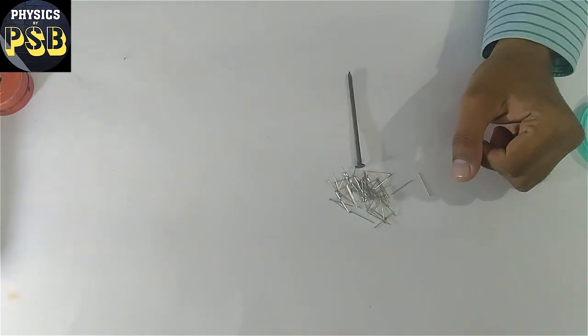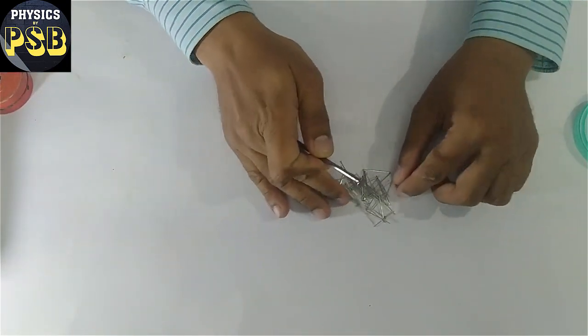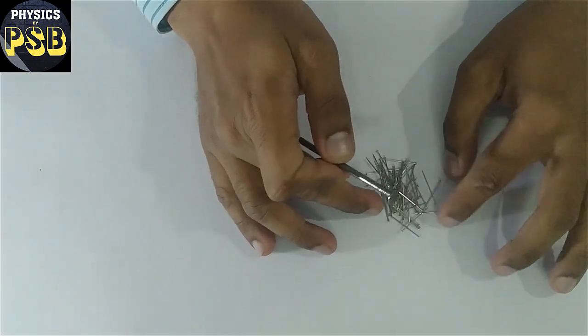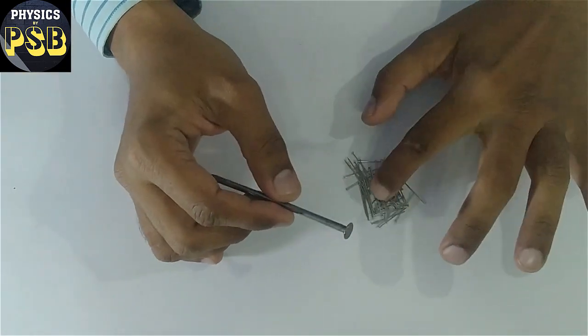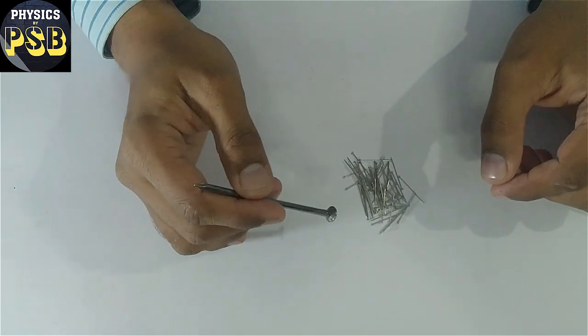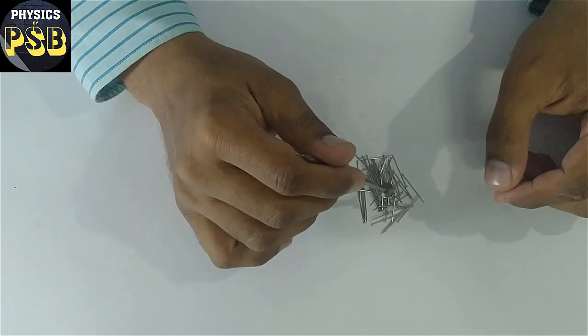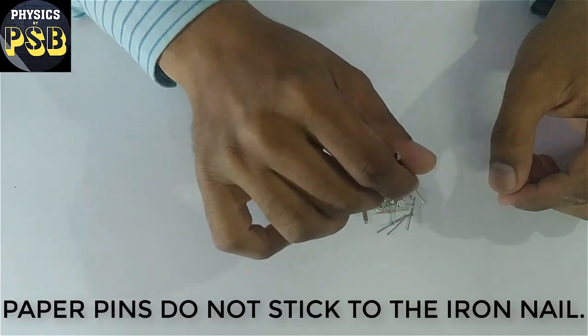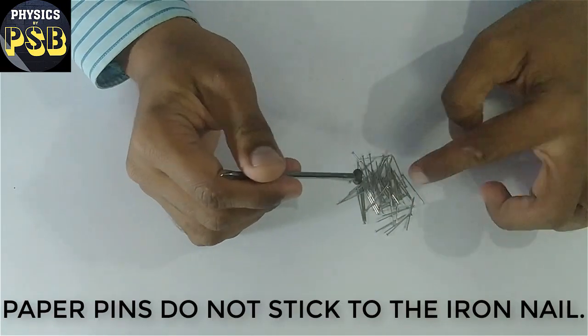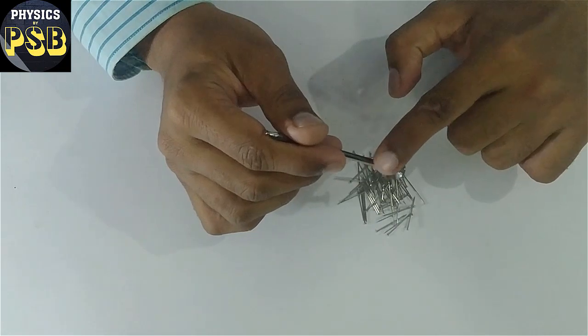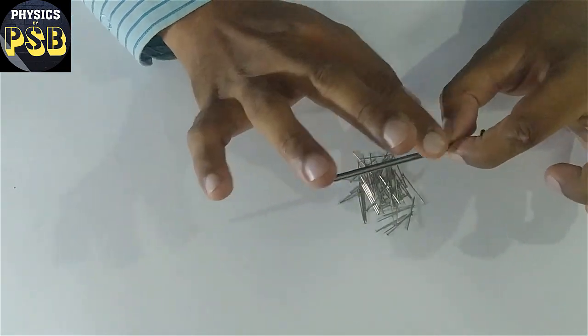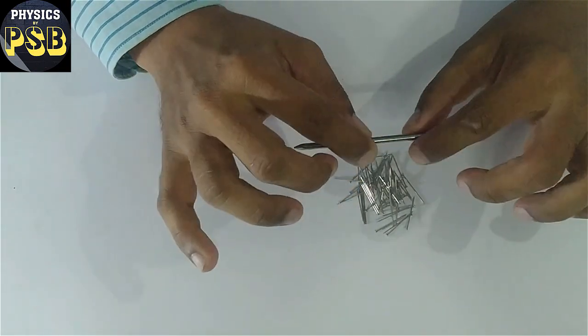Now before going ahead, let me show you that this nail is not a magnet. For that I have brought these paper pins. When I bring them near, you can see nothing happens. The pins do not stick to it. This shows that it is not a magnet.